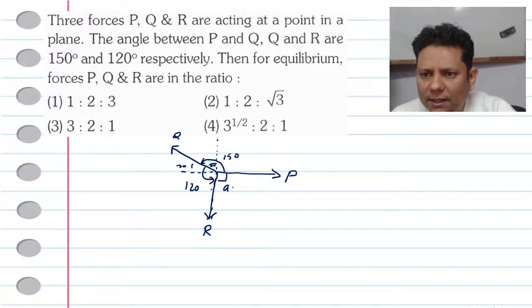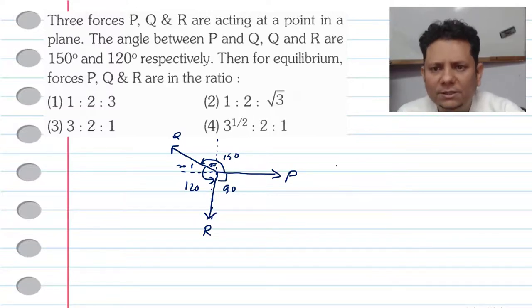And hence this angle is 90. Because this angle is 360, so this angle is 160. Now let me see the question. Then for equilibrium, what is the ratio?